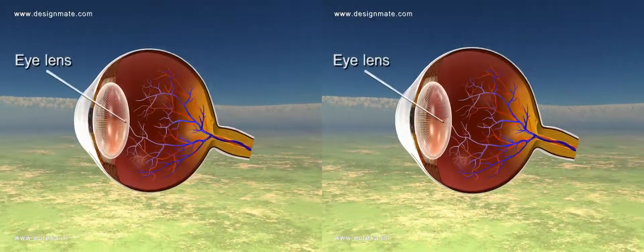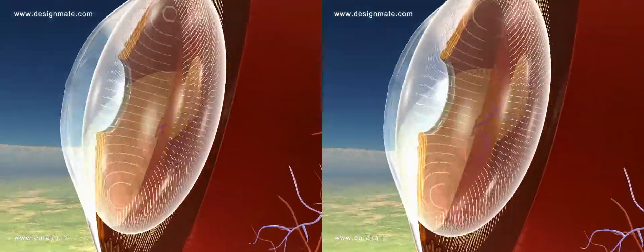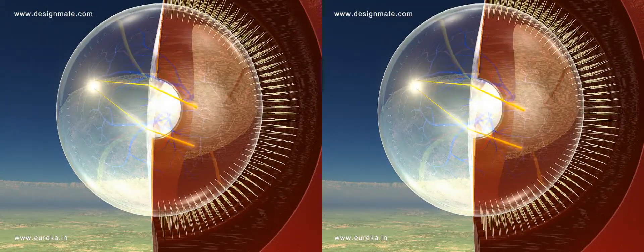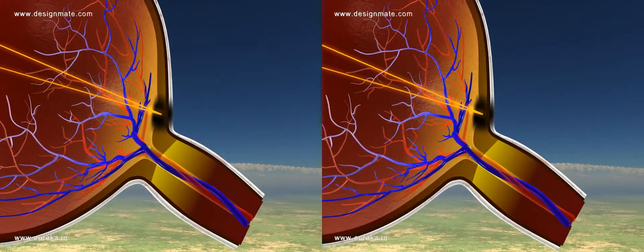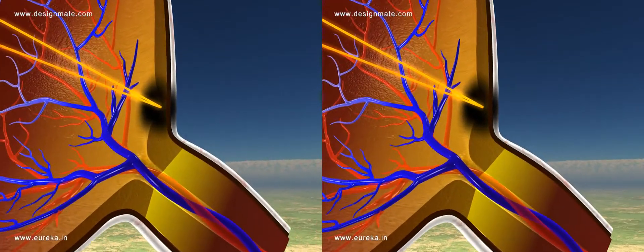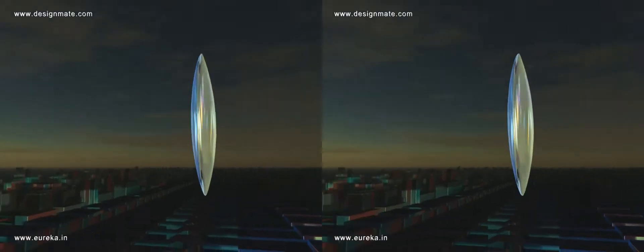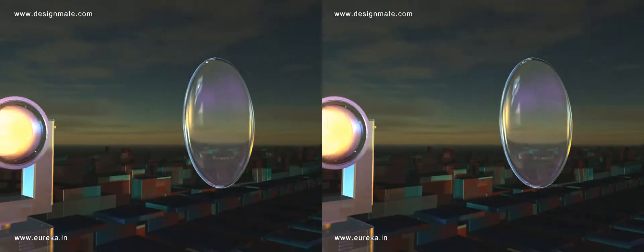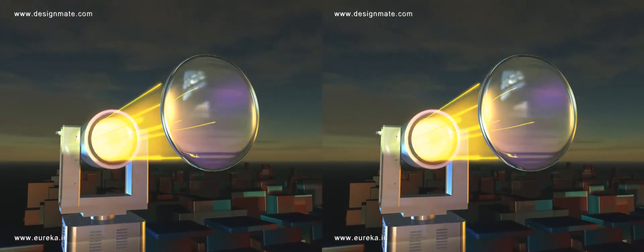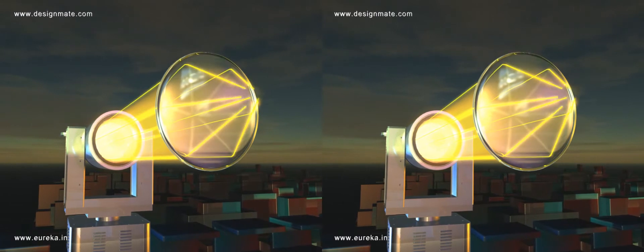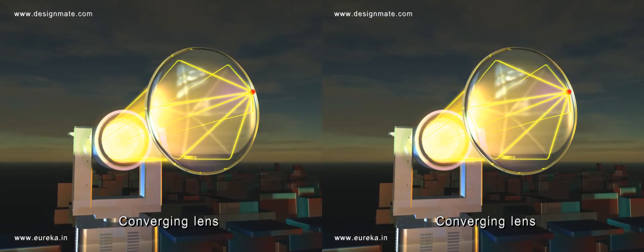The lens in a human eye is convex in nature. We should not look at the Sun directly as it can damage our eyes permanently. The rays of light incident on a convex lens get converged on the other side, so it can also be called a converging lens.